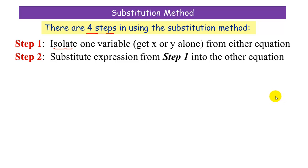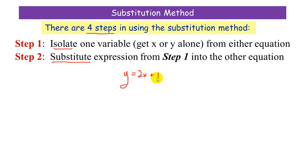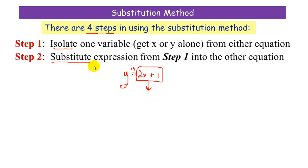Our second step is, once we have isolated the variable, we are going to substitute the expression that we got in step one into the other equation. In other words, if we got something like y equals 2x plus 1 and we've isolated y, then 2x plus 1 becomes y. We're saying y is this, so in any place we see y in another equation, we can just plug that right in. That's what it means to substitute.